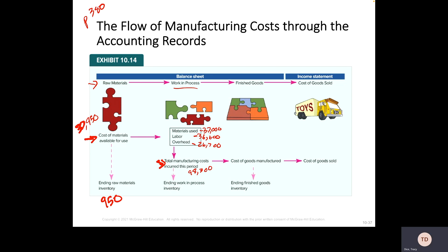For this example, we are starting with zero in raw materials and zero in work in process, but we do have $2,000 in finished goods. Work in process is when you are actually creating the product. Some of you might think: why would you need that? If you make a table and it's done in a day, you might not move $37,000 worth of materials through work in process.